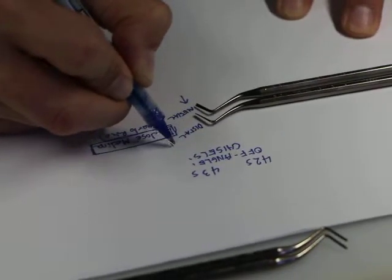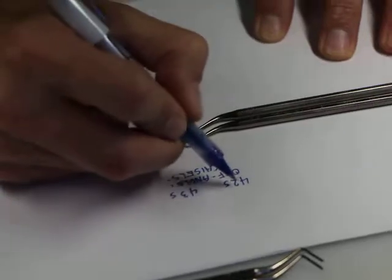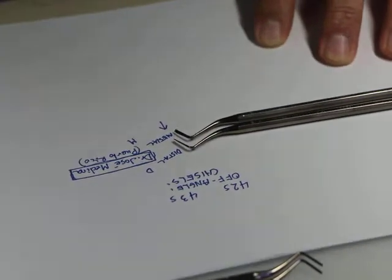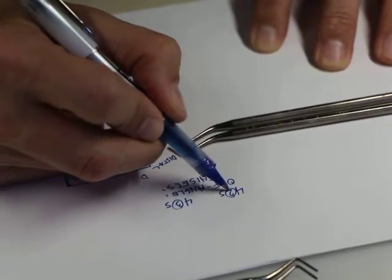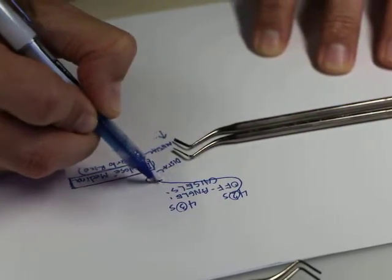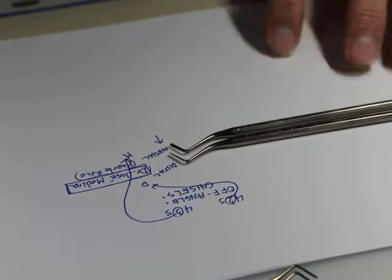Distal, the letter D comes before M in the alphabet. Agreed? And, numerically, two comes before three. So, the 42 is the distal, the 43 is the mesial. I think that's just one way to remember it.